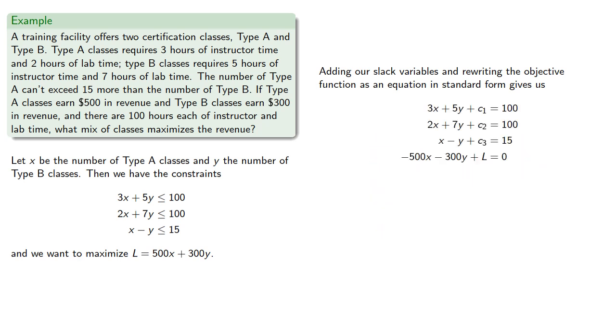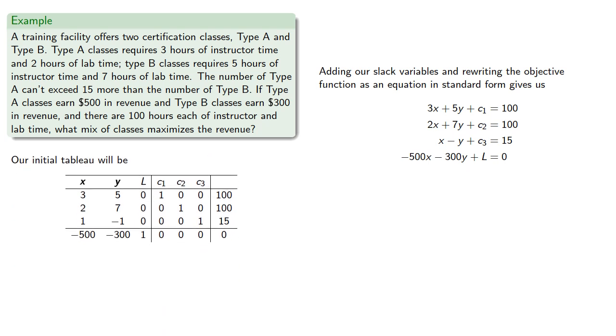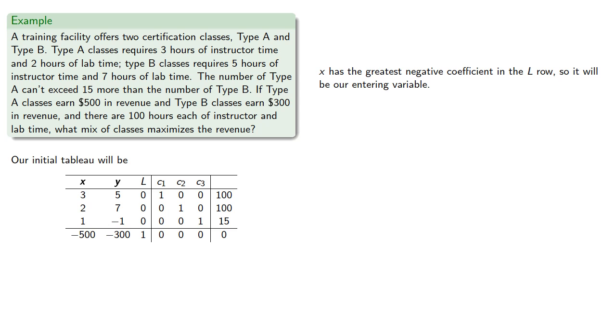And so our initial tableau will be. Now X has the greatest negative coefficient in the L row, so it will be our entering variable. We find the quotients.